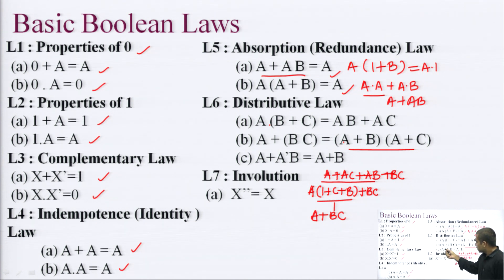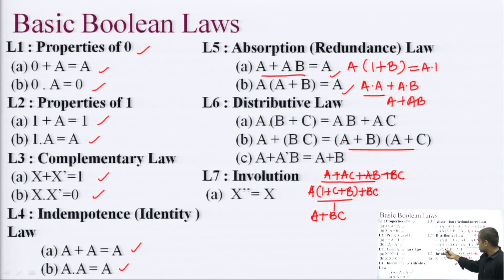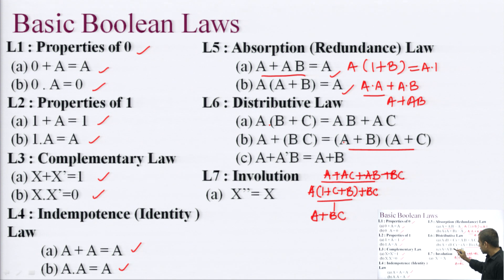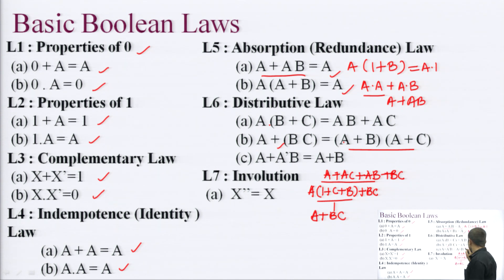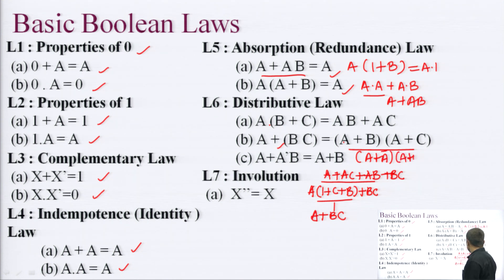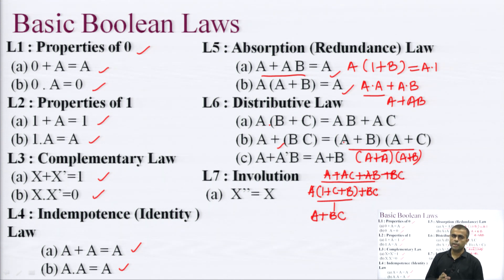Another form of the distributive law: A plus A-bar B equals A plus B. Applying the distributive law to A plus (A-bar into B), we treat A as x, A-bar as y, and B as z, expanding to (A plus A-bar) into (A plus B). Since A plus A-bar equals 1, this becomes 1 into (A plus B), which equals A plus B.